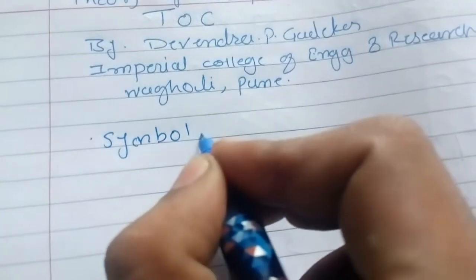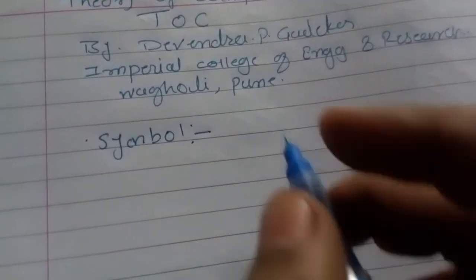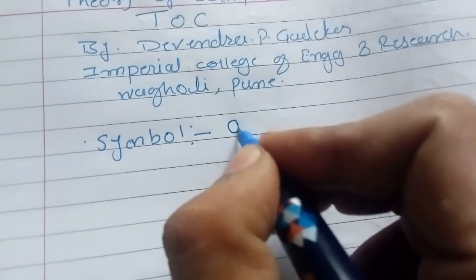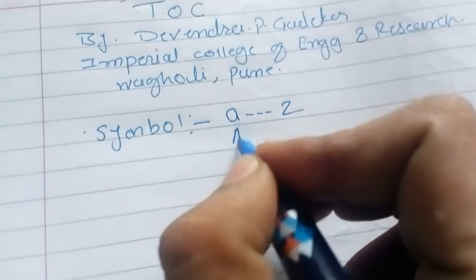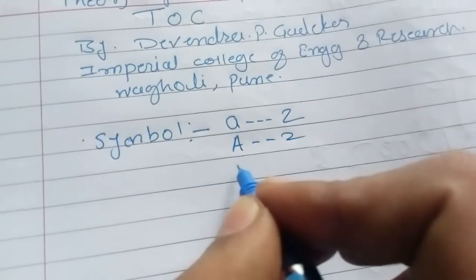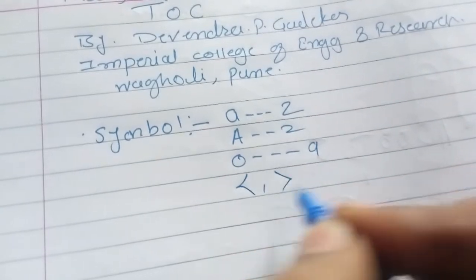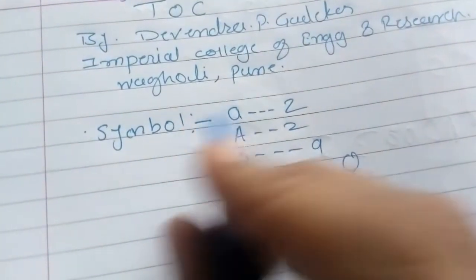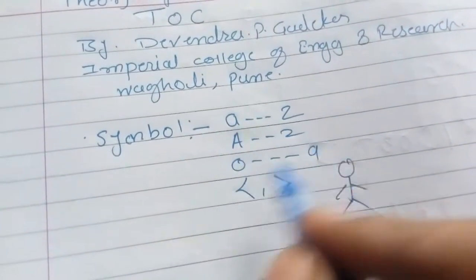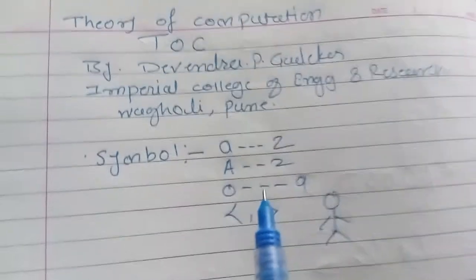The first basic concept is symbol. Symbol is the basic building block of TOC. What exactly is a symbol? Symbol could be anything - you'll have characters from a to z, or digits from zero to nine, or symbols like these. All of these are symbols. A symbol is the basic building block and you can have anything as a symbol.